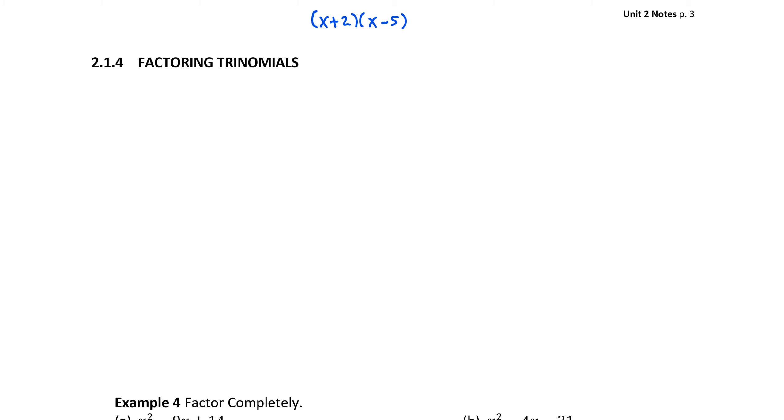In this section, we're going to talk about looking at patterns that we can derive from the FOIL process, then reversing that FOIL process to factor. Let's quickly review FOIL. If I want to multiply two binomials together — x plus 2 times x minus 5 — we multiply the first two terms to get x squared, outside terms to get negative 5x, inside terms to get plus 2x, and last terms to get negative 10. Combining middle terms, we get x squared minus 3x minus 10. That process is called FOIL.